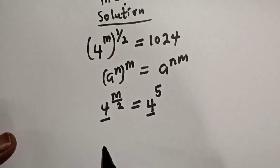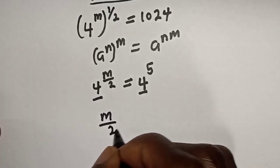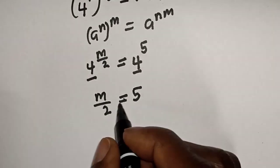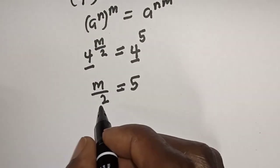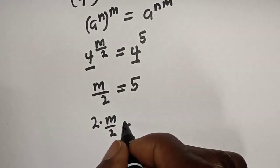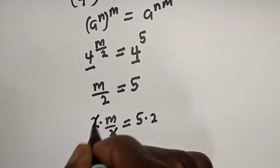have the same base four. Therefore, m over two is equal to five. Then let's multiply both sides by two. We have two multiply by m over two is equal to five multiply by two. This will cancel this.